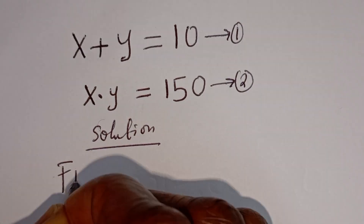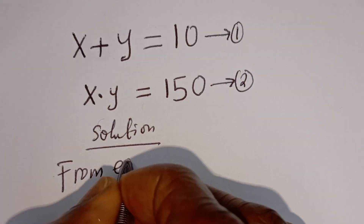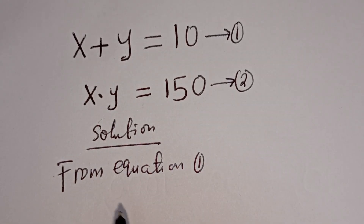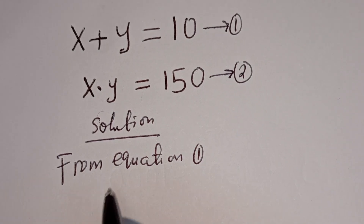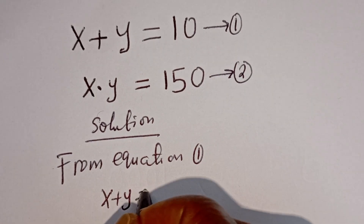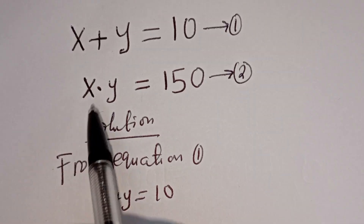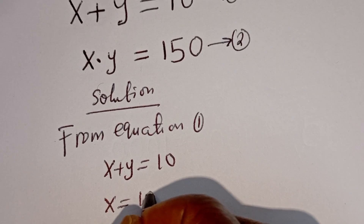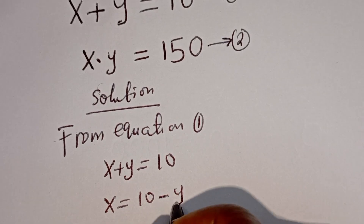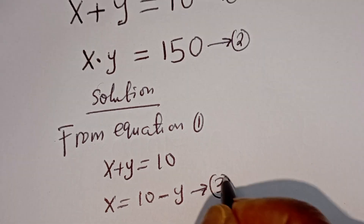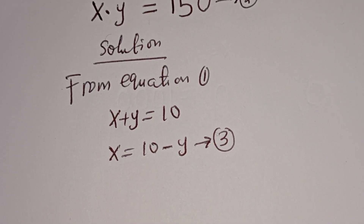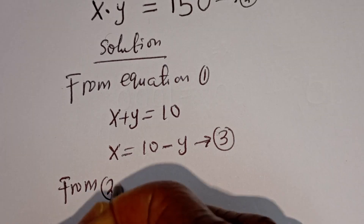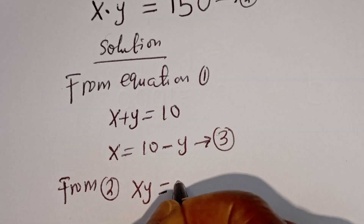From equation 1: X plus Y is equal to 10 — let's call this equation 1. X times Y is equal to 150 — let's call this equation 2.